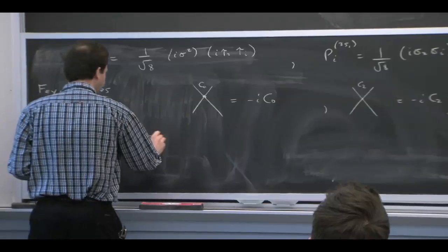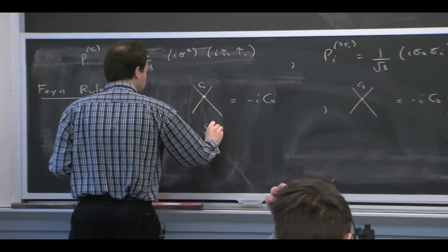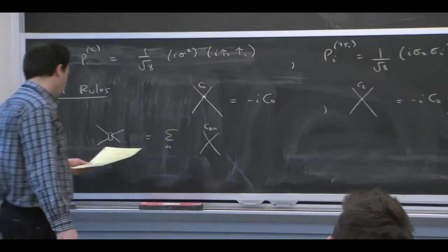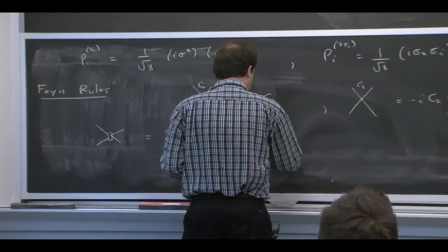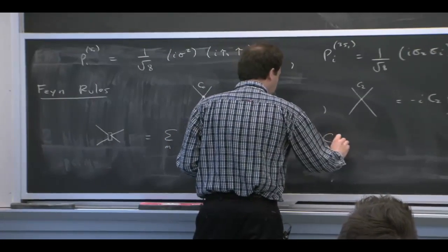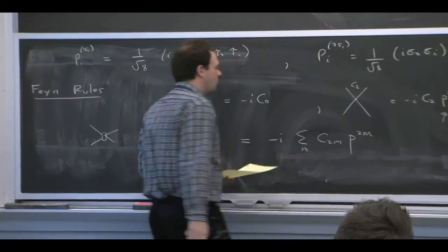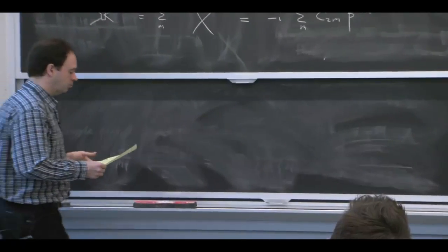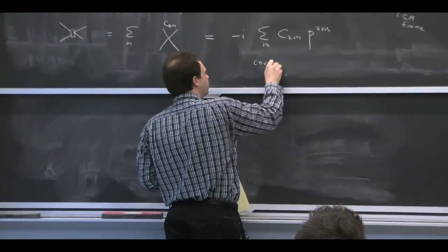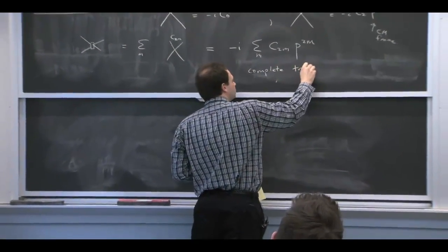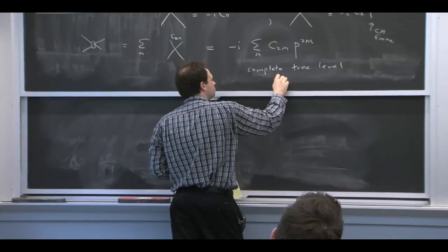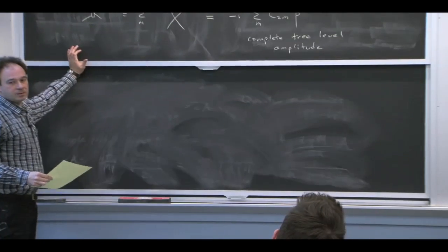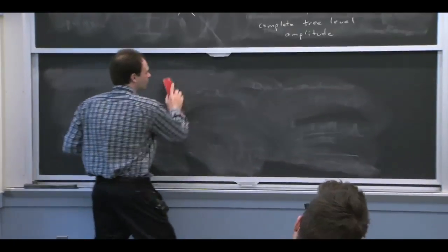And so we can actually just write down the Feynman rule for the complete set of operators there, if we adopt this convention. So if you insert a guy with 2m derivatives, derivatives always have to come in pairs, because of angular momentum. You just have that Feynman rule summed over the number of derivatives. So this is the complete, in this theory, this is the complete tree level amplitude from those interactions over there. OK. So it's a very nice theory. Simple.